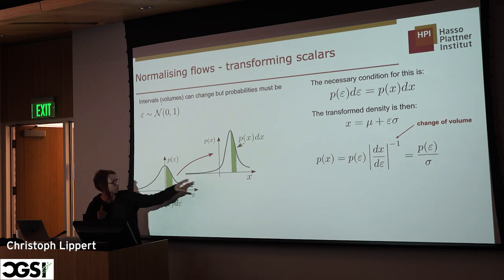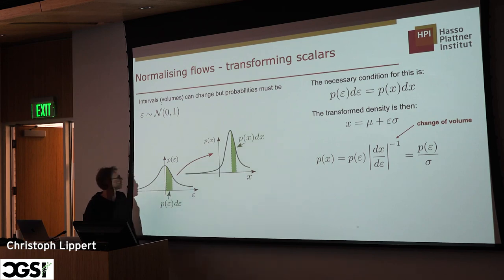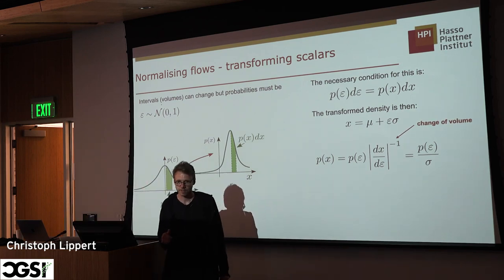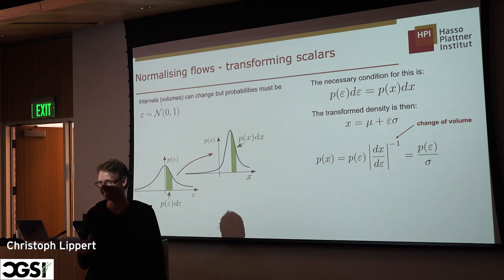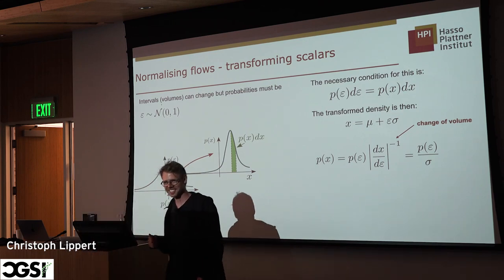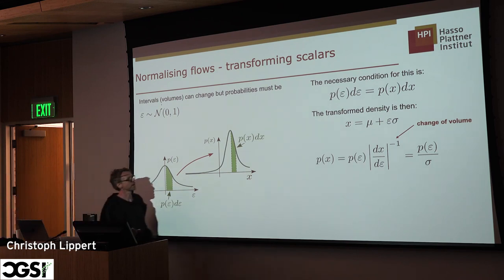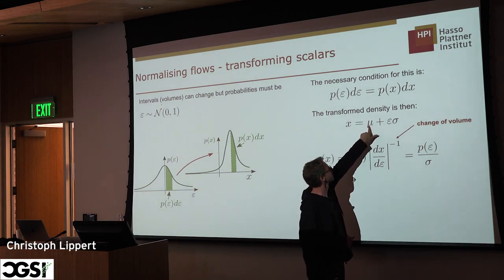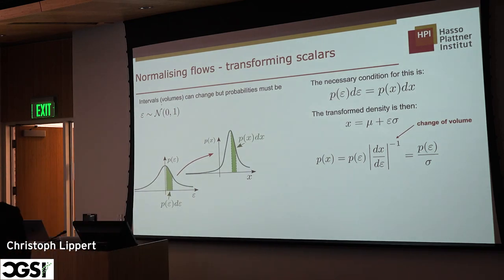This is calculus — a change of variables. The transform function is basically adding μ and multiplying by σ — that's the normalizing flow here. It's a very simple example: an affine flow. The question was how these functions have to look such that we can apply them layer-wise. The key properties are that they need to be invertible, and we need to be able to compute the absolute value of the determinant of the Jacobian.